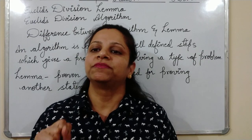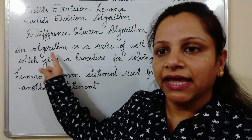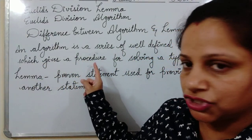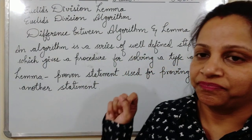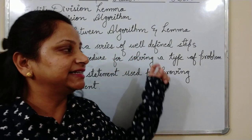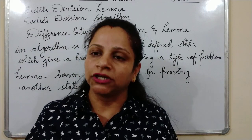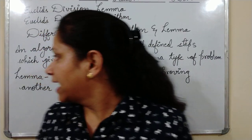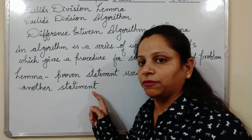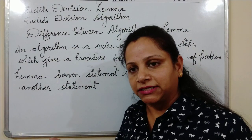Now let me tell you the difference between a lemma and an algorithm. An algorithm is a series of well-defined steps which gives a procedure for solving a type of problem — certain steps to reach a conclusion. A lemma is a proven statement used for proving another statement.